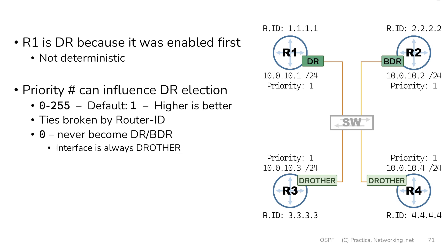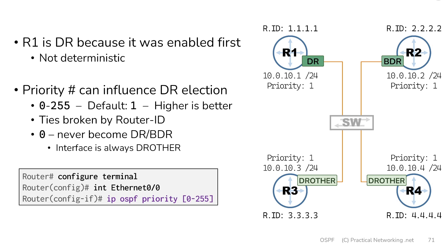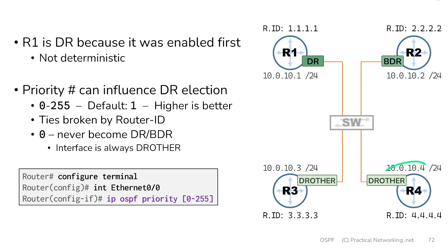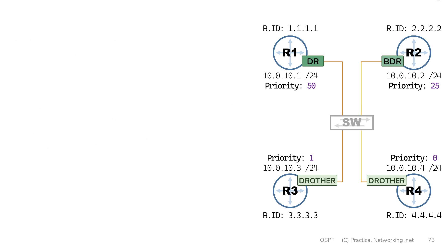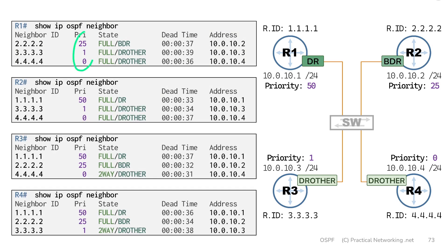There are certain types of network designs that require this — that'll make more sense when you look at the different network designs that exist with OSPF. This is the command you would use to set an OSPF priority number, and notice you have to do it inside the interface configuration itself, because the priority number is a per-interface item. So in our topology, if I wanted to force router 1 to be the DR and router 2 to be the BDR, and force router 4 to never be the DR or BDR, I could set priority numbers like so: router 1 gets priority 50, router 2 gets 25, router 3 is left at the default so it can take over as BDR if needed, and router 4 is set to 0. These priority numbers are also reflected in the show ip ospf neighbor command output.